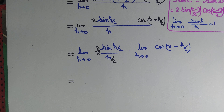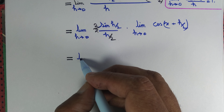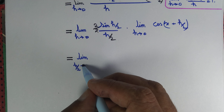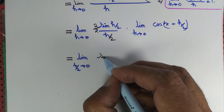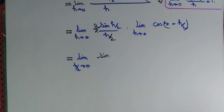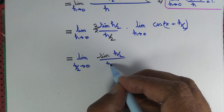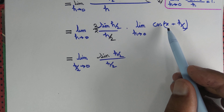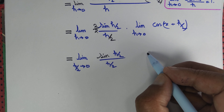As h tends to 0, h/2 should also tend to 0, and conversely, if h/2 tends to 0 then h tends to 0 as well. So this same limit is the same as the limit as h/2 tends to 0 of sin(h/2) divided by (h/2), times the limit as h tends to 0 of cos(x + h/2), which simply tends to cos x.